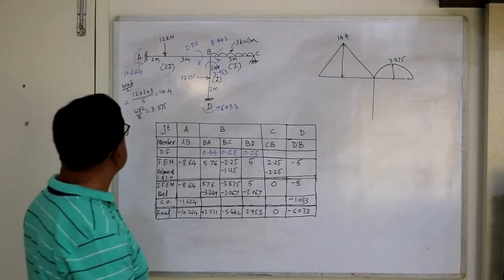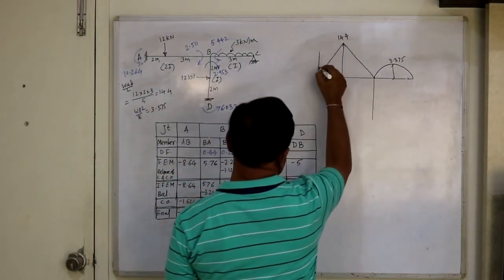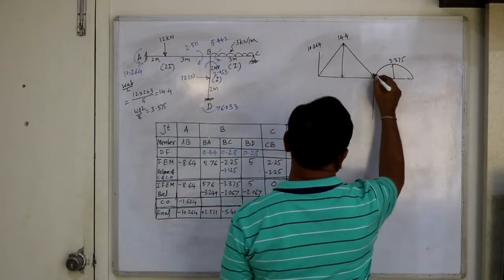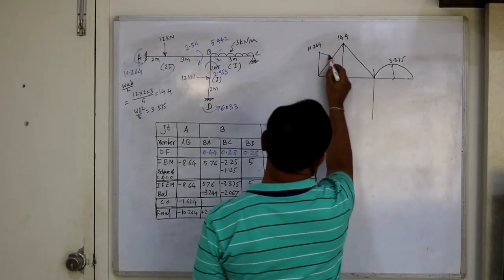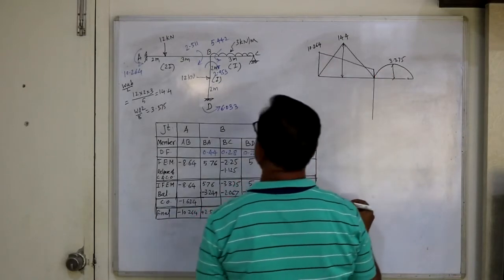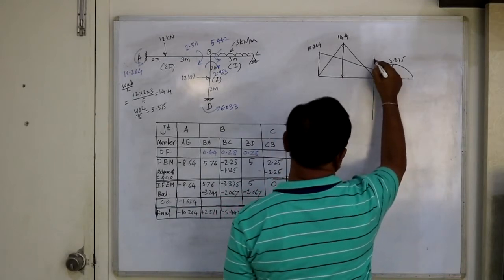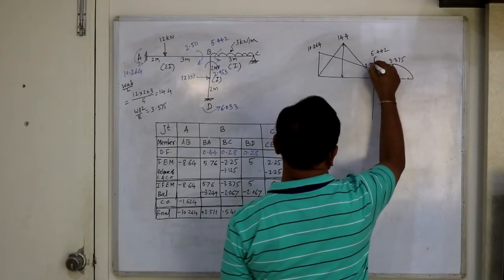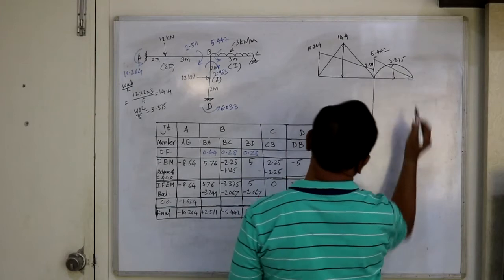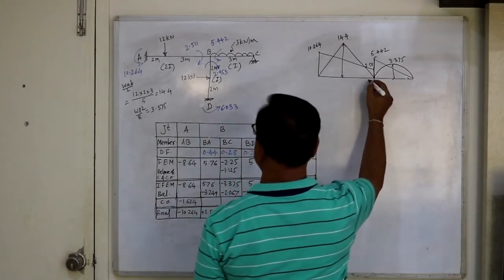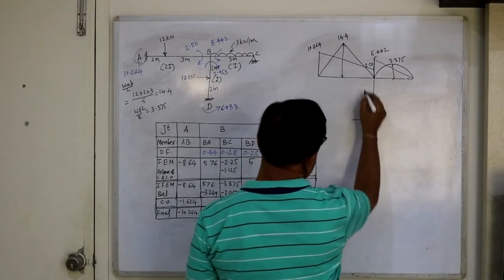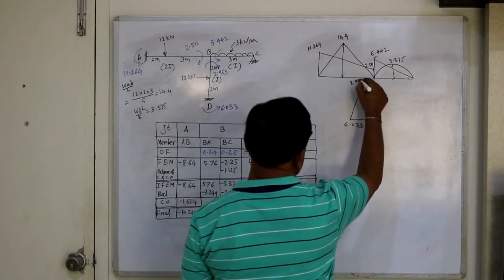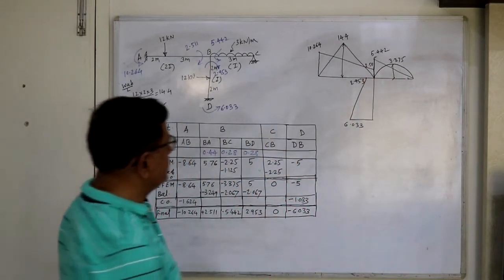Now due to end moments: this is anti-clockwise, producing tension upward — 10.264. This clockwise also produces tension upward and this is 2.251. Again anti-clockwise so this is 5.442, this is 2.511, and this is zero here. Then this is clockwise tension upward and this is 2.953.